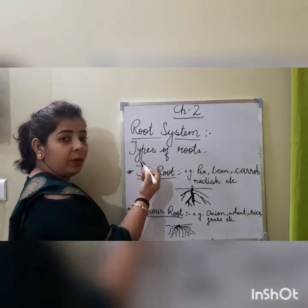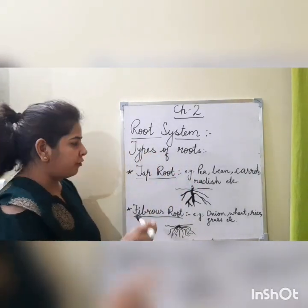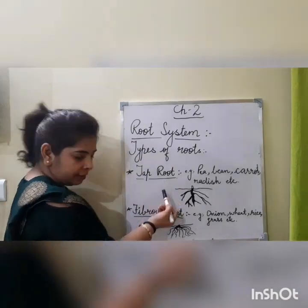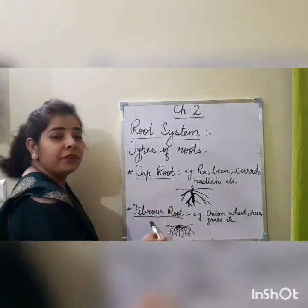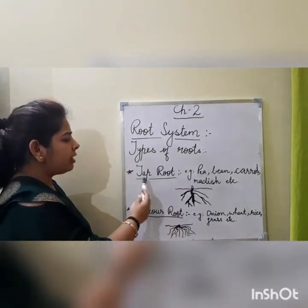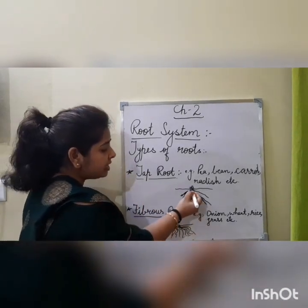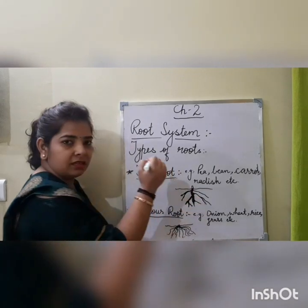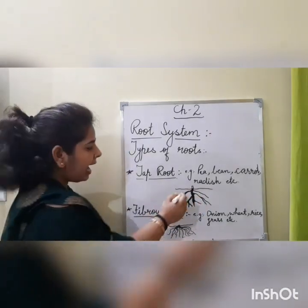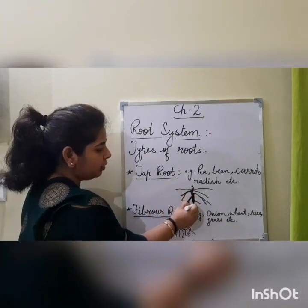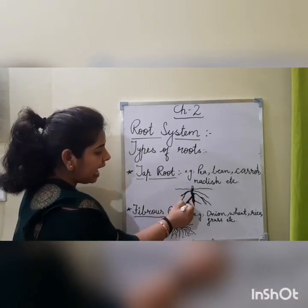Now kids, we will study about the root system in detail — types of roots. The function of the root is to absorb water and mineral from the soil and to fix the plant in the soil. We have mainly two types of root: tap root and fibrous root.